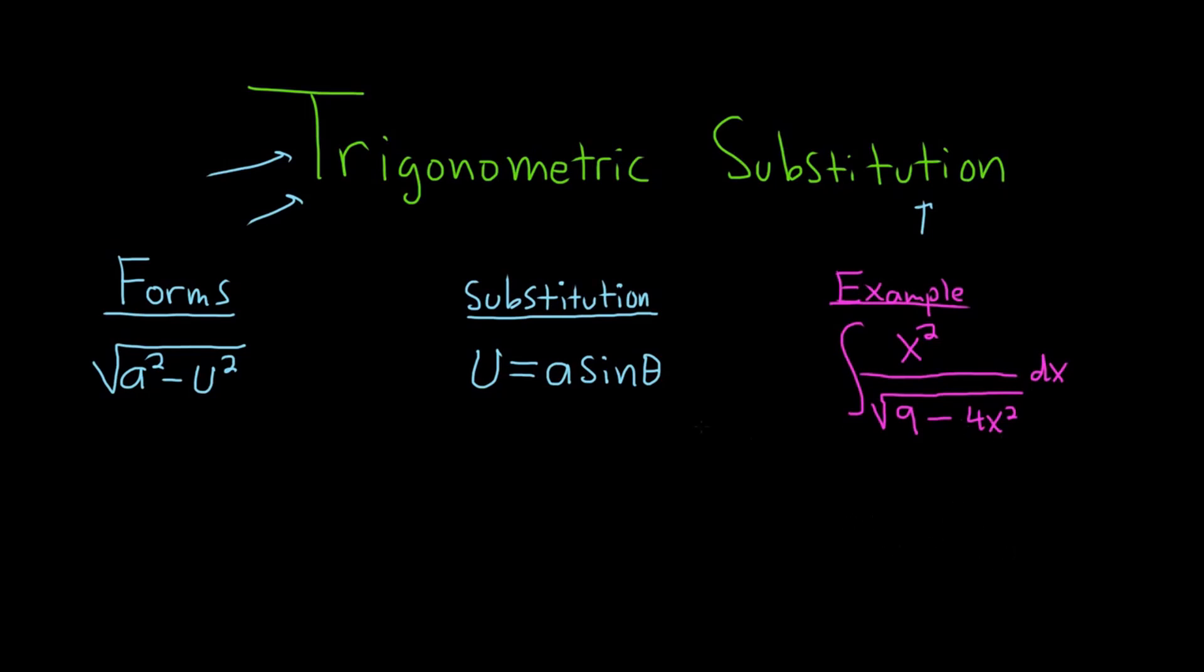In this case here you would think about the bottom piece. So the 9 you can really think of that as 3 squared. And this piece here, the 4x squared, is really 2x squared. So you see your a here is 3, and your u is simply 2x.